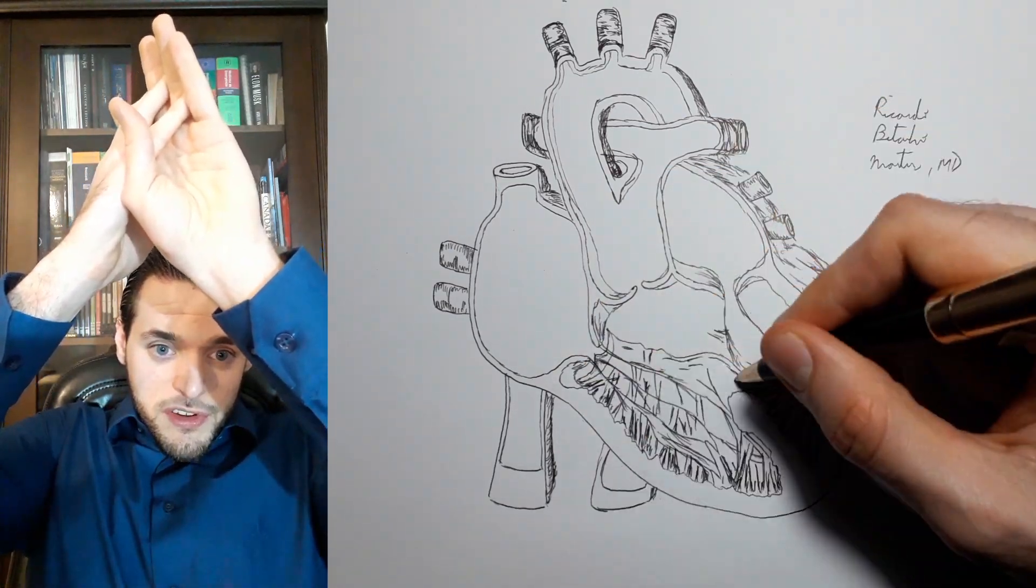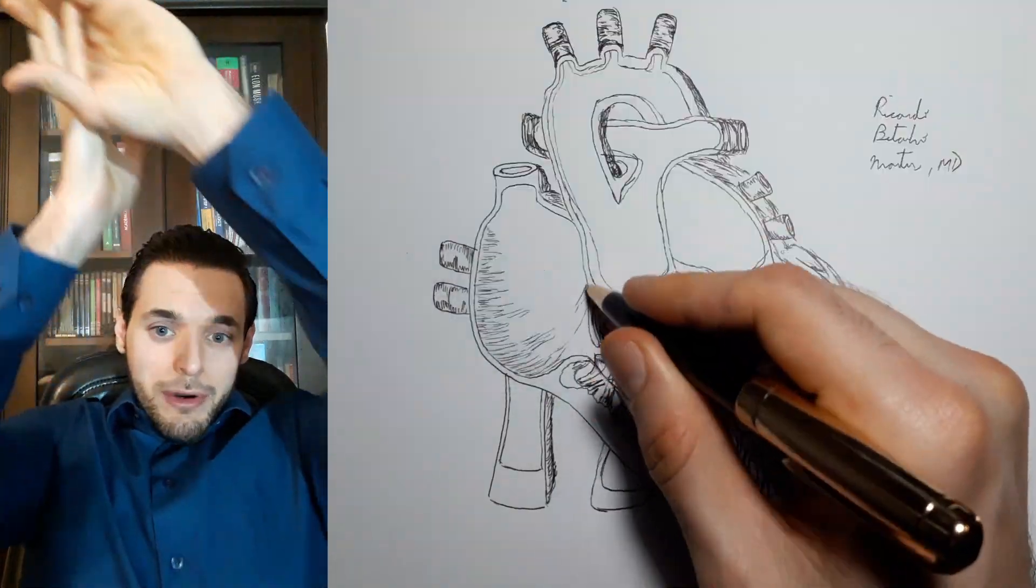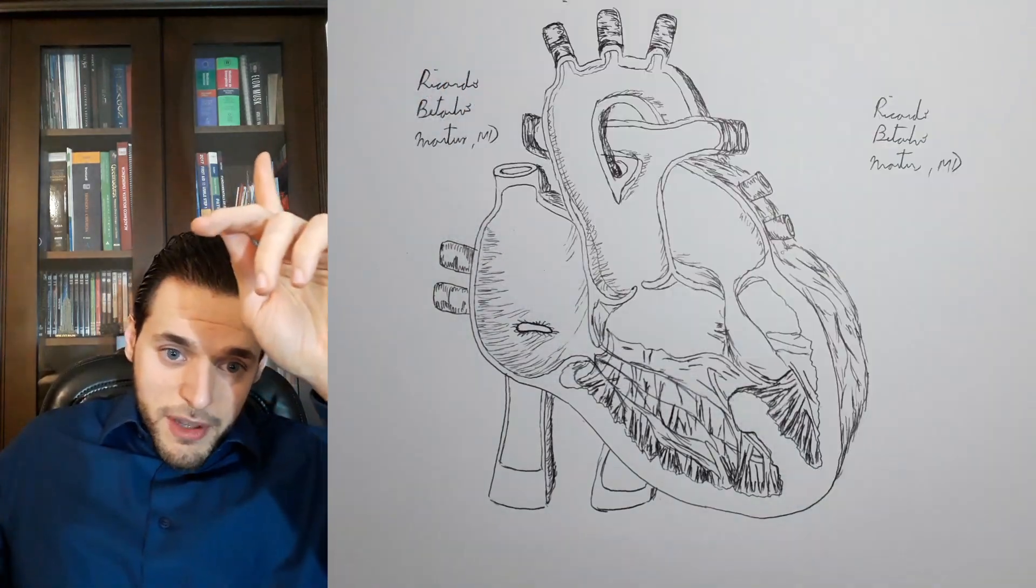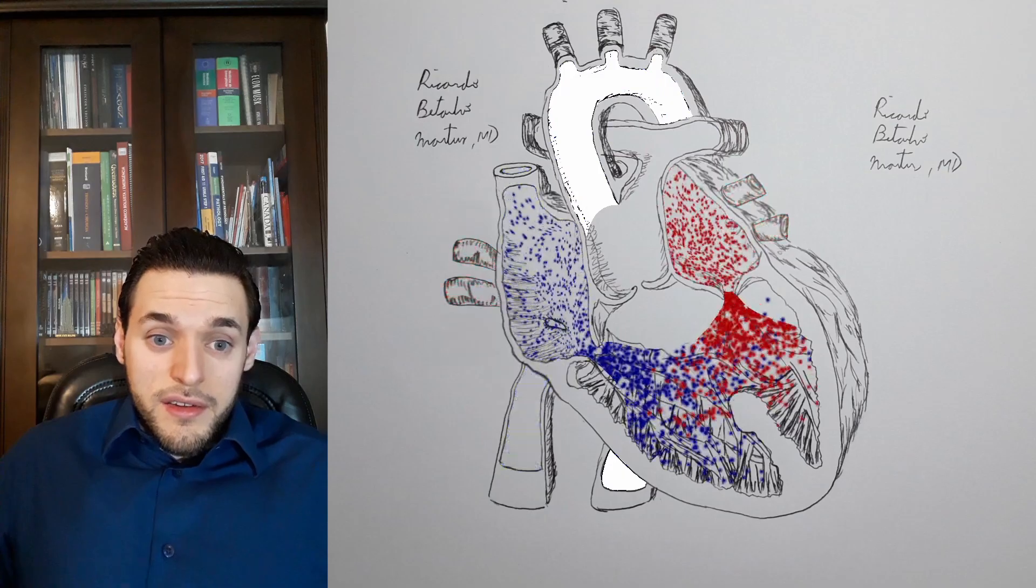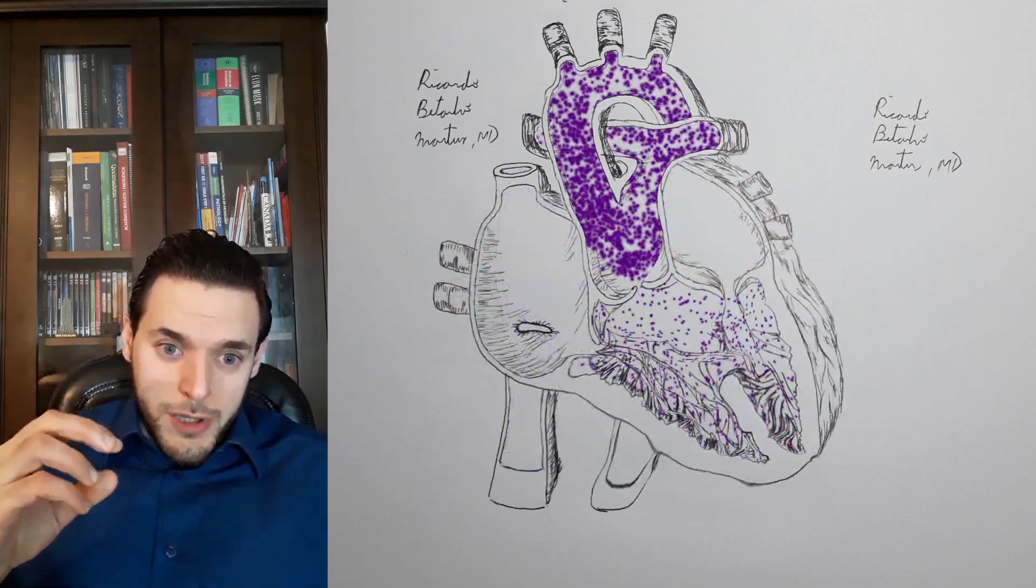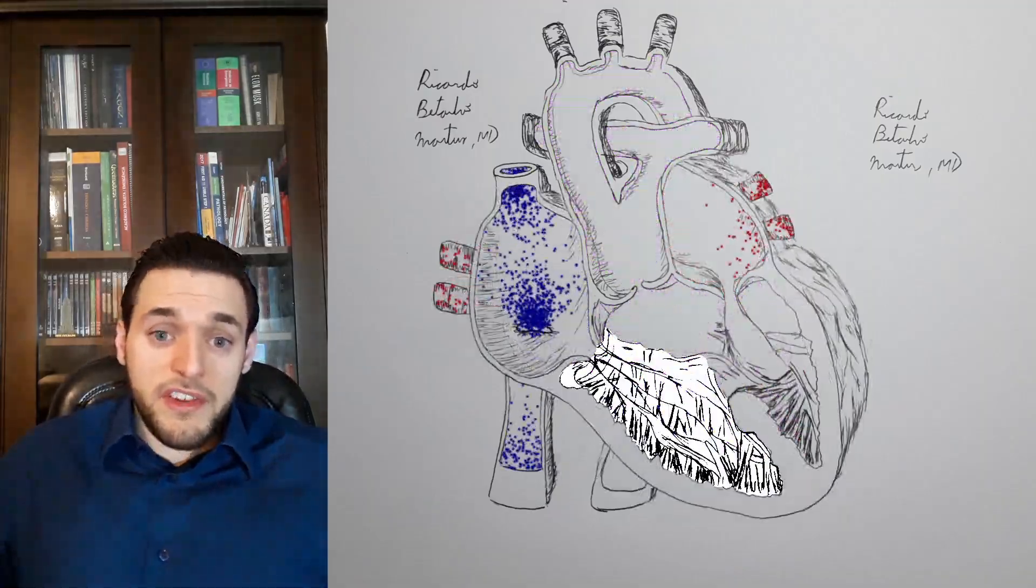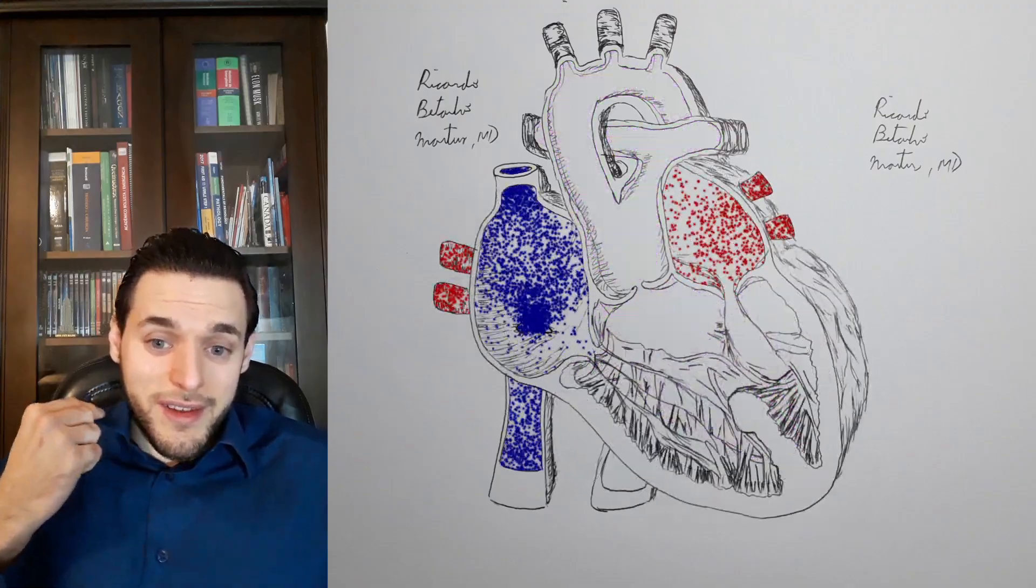This leads to partially oxygenated blood going to both the systemic and pulmonary circulations. Since the blood leaving for the systemic circulation is only partially oxygenated, since it has mixed with deoxygenated blood coming from the right ventricle, the patient will present some degree of hypoxemia, which is likely to present as cyanosis.